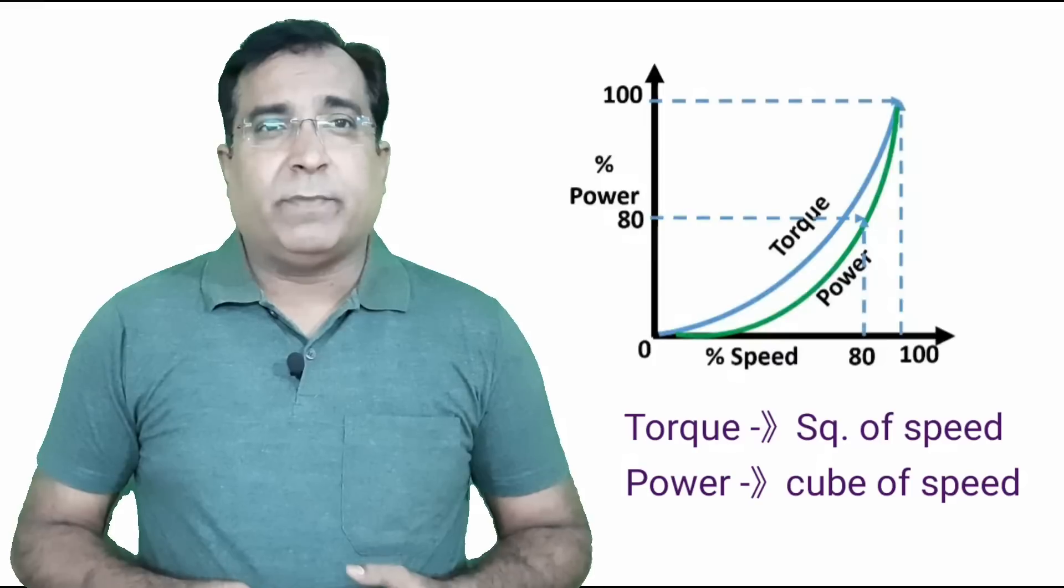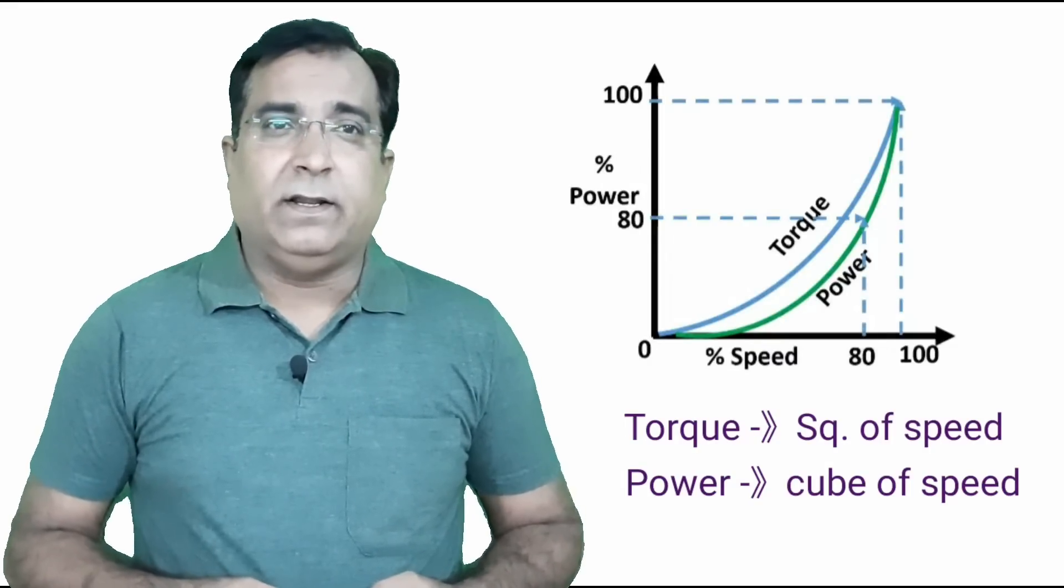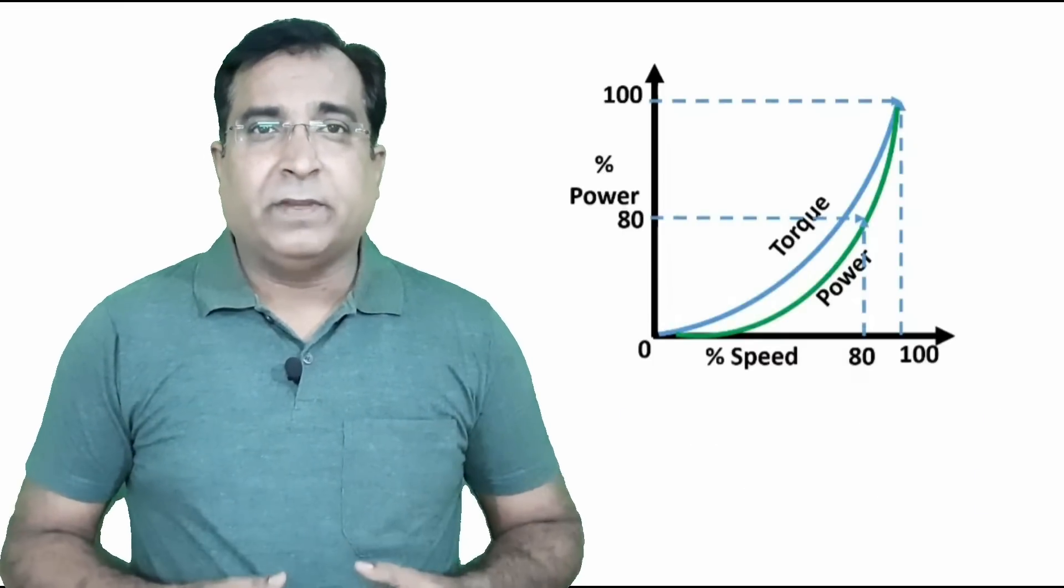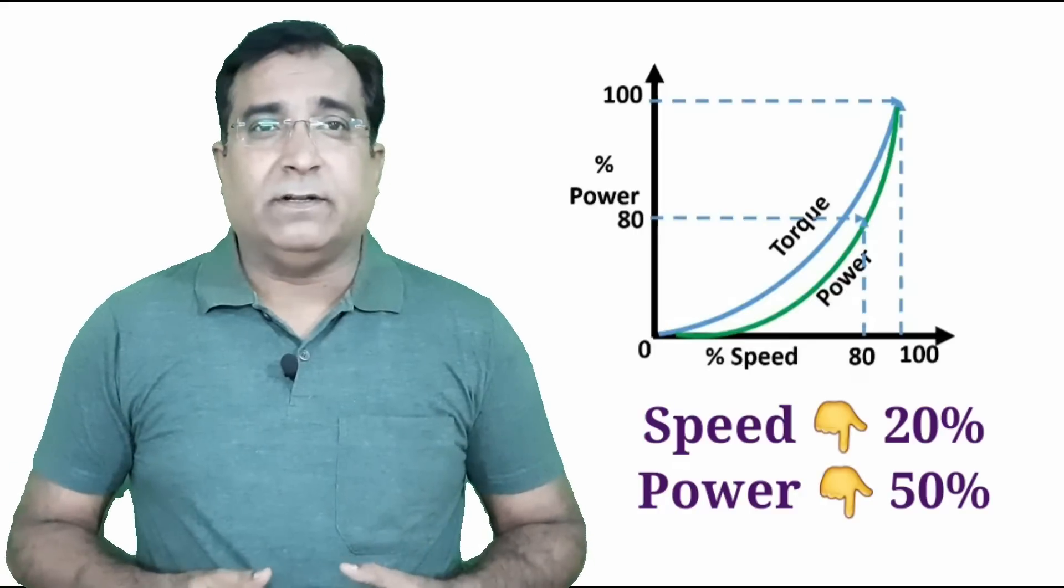As speed is reduced in this equipment, the torque demand also decreases according to the square of speed and power demand also decreases according to the cube of speed. For example, if speed is reduced by 20%, then power comes down to the 50% level.